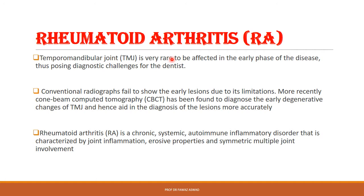Using CBCT, degenerative changes of the TMJ can be demonstrated. Rheumatoid arthritis is a chronic systemic autoimmune inflammatory disorder associated with joint inflammation. It may have erosive properties, and multiple joints of the body may be involved. The TMJ is the last joint to be affected, typically in the later stages of rheumatoid arthritis.